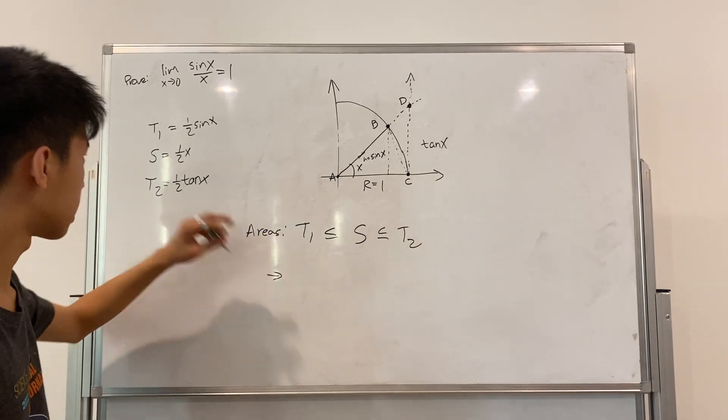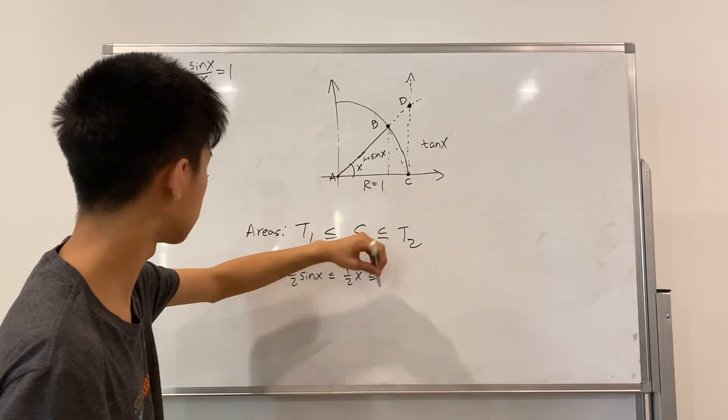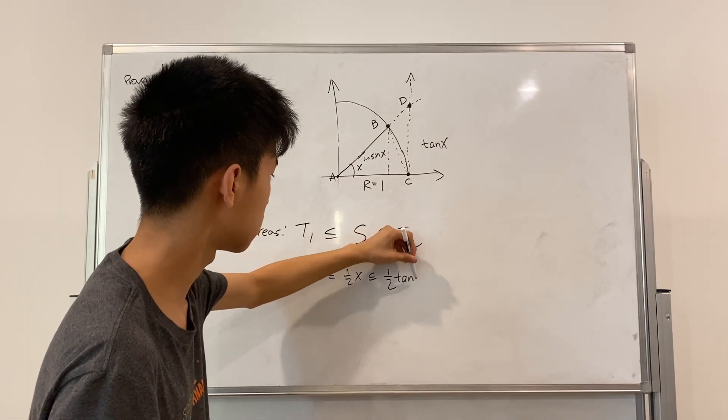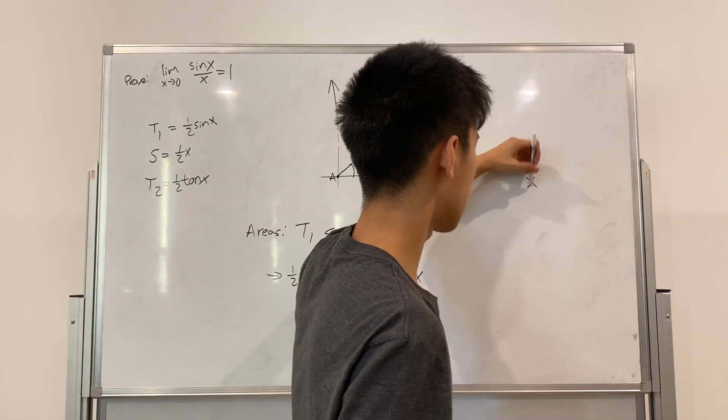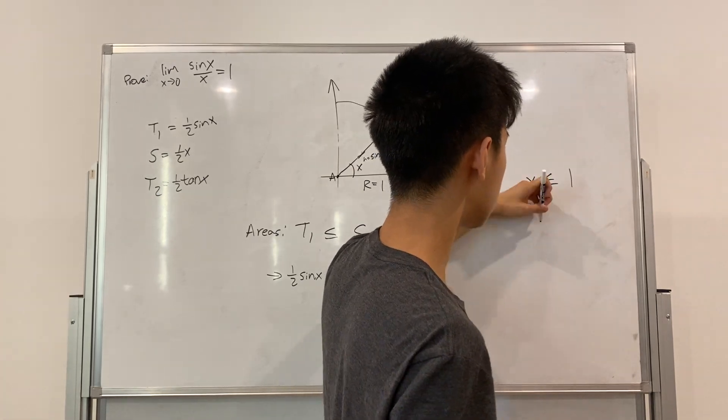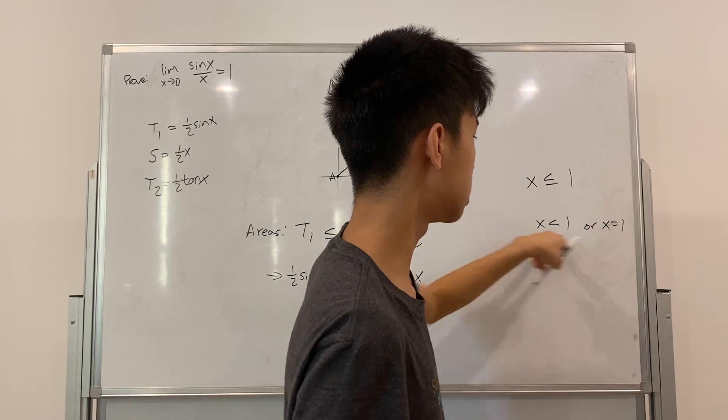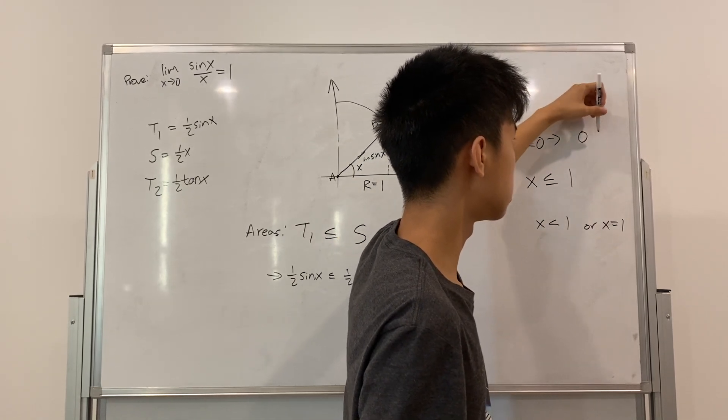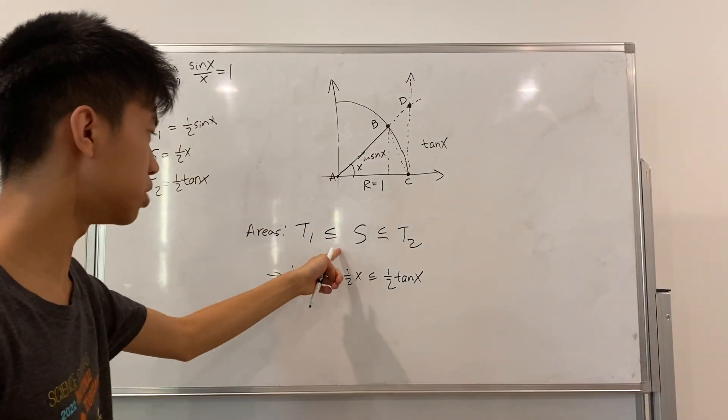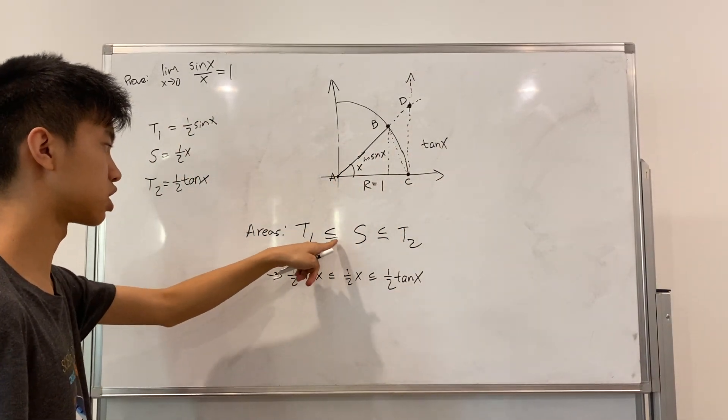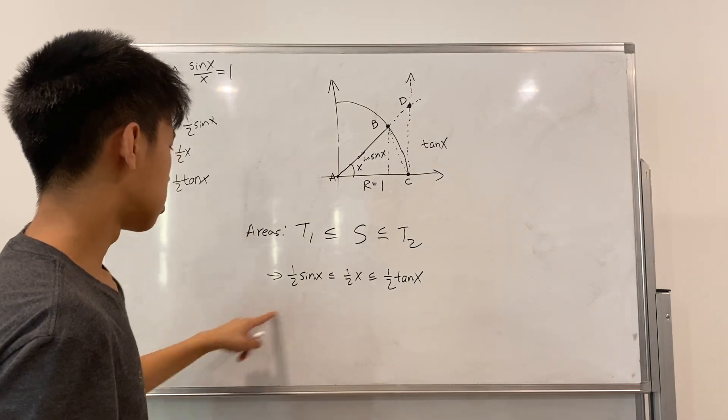So, then we can say that, in this triangle, one half sine of X is less than one half X, less than one half tangent X. And, the reason why I can use this equal sign is, basically, if you're saying, like, X is equal to or less than one, for example. You're saying X is less than one or X is equal to one. So, one of these must be true. So, if you say X equals zero, then you're saying zero is less than or equal to one, which is true.